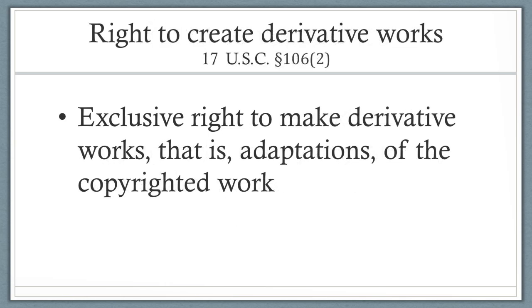The exclusive right to make derivative works — that is, adaptations of the copyrighted work — is the second of the exclusive rights. This right overlaps with the right to reproduce, but is broader because reproduction requires fixation in copies, whereas the preparation of a derivative work, such as a dance or performance, may be an infringement even though nothing is ever fixed in a tangible form. Examples include a photograph of a painting protected by copyright, a translation, or a screenplay based on a novel.